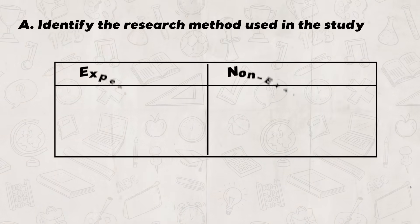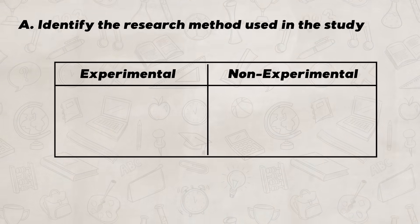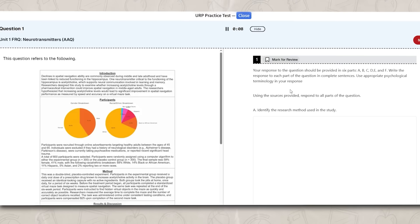Starting with Part A: identify the research method used in the study. For Part A, there are only seven answers that you can give.